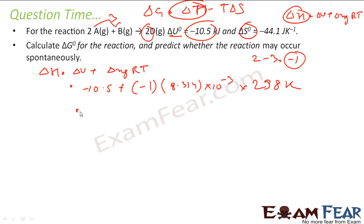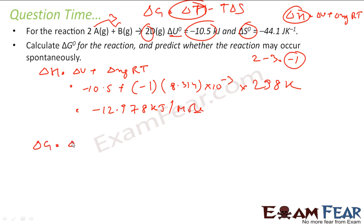Solving this, you get delta H equal to minus 12.978 kilojoules per mole. Now I have delta H, so I can find delta G easily using the equation: delta G is nothing but delta H minus T delta S.